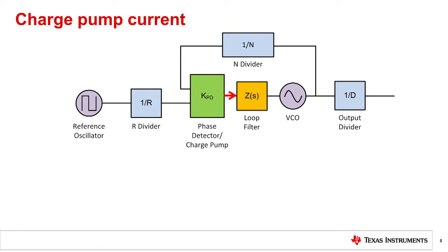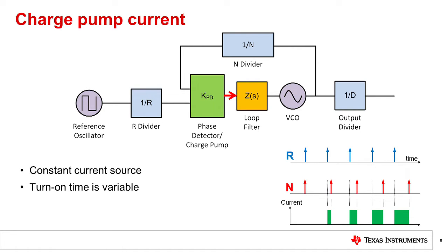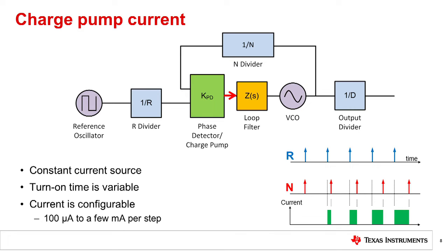Following the phase detector is a charge pump. The charge pump will either sink or source a constant current every time it is turned on. While that current amplitude is constant, the turn-on time is variable and is dependent on the phase difference between the signal from the R divider and N divider — so it's a kind of pulse-width modulation operation. Charge pump current can usually be configured by software in several different steps, each step around 100 microamps to a few milliamps depending on the part. A higher current is necessary to make a wide loop bandwidth. A smaller current can reduce phase detector spurs. In some cases a smaller current is intentionally set so that for the same loop bandwidth we can use a smaller capacitor value in the loop filter.